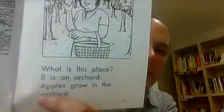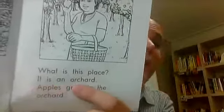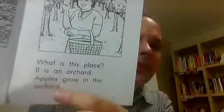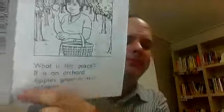What is this place? It is an orchard. Apples grow in the orchard. Orchard is like a fruit farm. They have lots of trees everywhere.